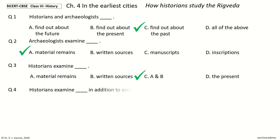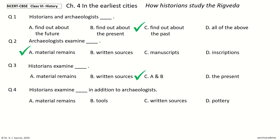Question 4. Historians examine — in addition to archaeologists — the options are: material remains, tools, written sources, or pottery. Your time to choose. And the answer is written sources. So, historians examine written sources in addition to archaeologists.